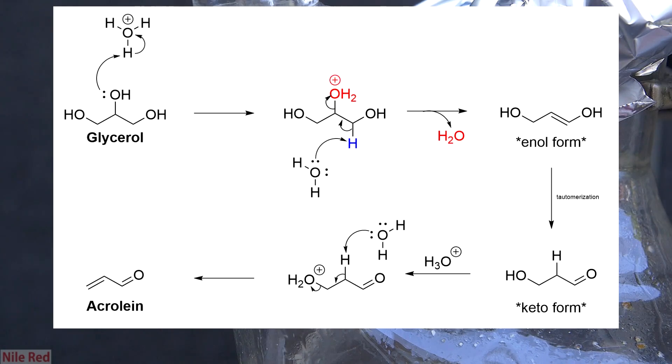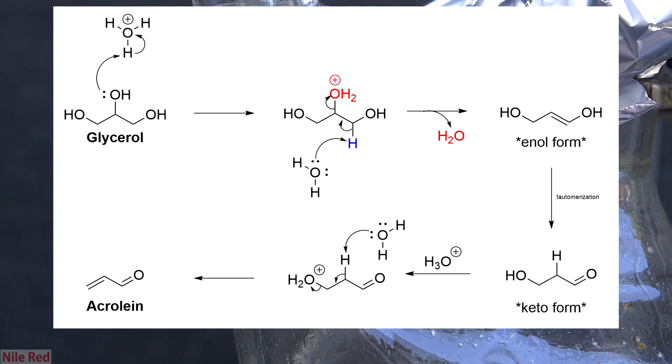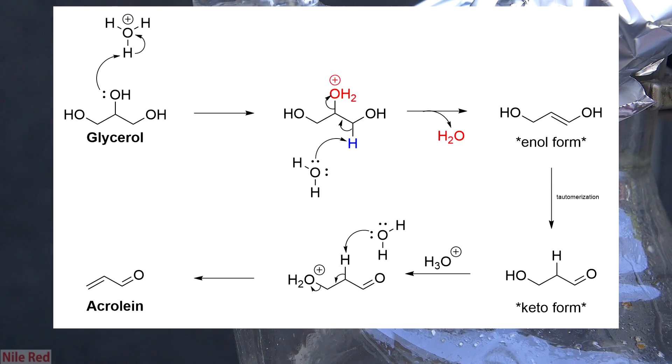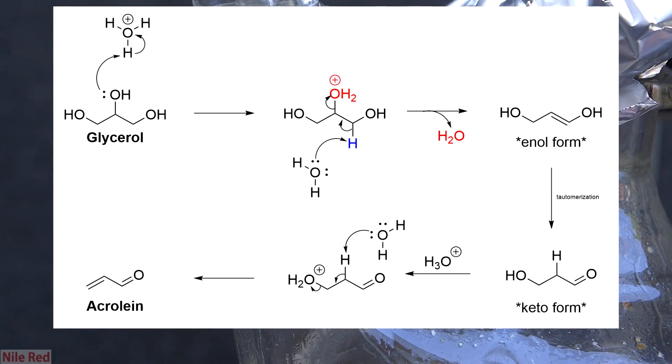Just like before, the hydroxyl is protonated to form water, and the hydrogen is taken away by another random water molecule. The electrons from the hydrogen move to form a double bond, the water is kicked off, and we generate our final acrolein molecule.